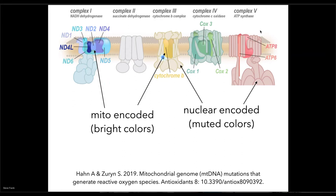The subunits shown in a very light color are encoded in the nucleus — they're nuclear genes — and the proteins are then exported to the mitochondrion. The subunits in bright colors are encoded by the mitochondrial genes. They then assemble as components of these complex molecules, which have many different parts.